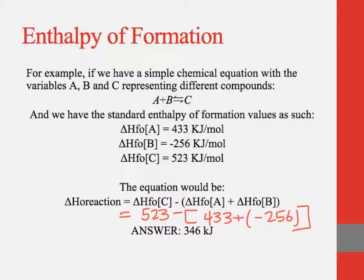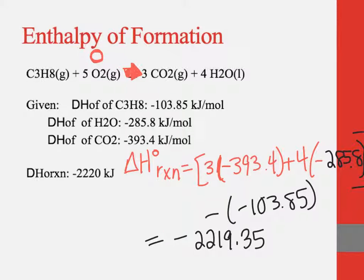Now this problem was easy because we only had a one-to-one ratio for all of our reactants and products. If it wasn't one-to-one, we would have to then multiply those individual delta H values by the coefficient.